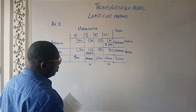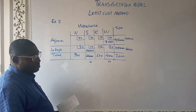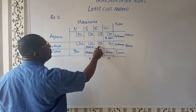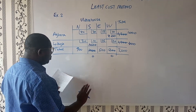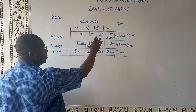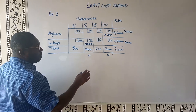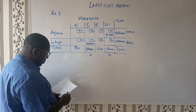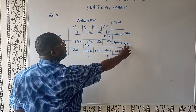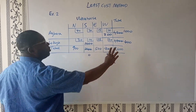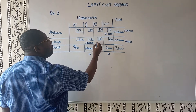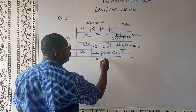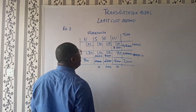The next least cost is 15. We can see we have 15 here and 15 here, so we can fill either one. For my solution, I took the 400 and filled it in here. So we're going to have 100 left, and this has been fully exhausted.